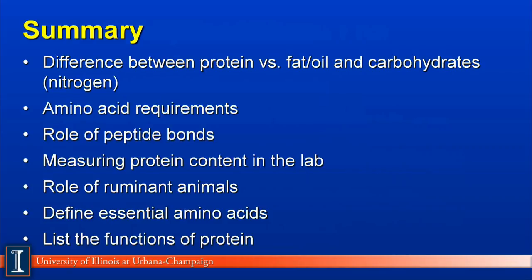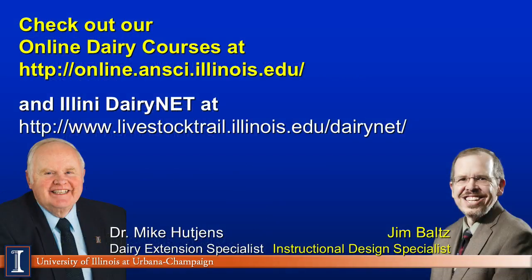Let's summarize this module. We must understand the differences between protein and other energy sources such as fats, oils, and carbohydrates — the magic element is nitrogen, and sulfur can also appear in a few amino acids. Animals really have an amino acid requirement, not a protein requirement. We must understand what peptide bonds are and why they are important in forming and digesting protein to be absorbed as amino acids. We must understand how to measure protein in a lab using the Kjeldahl process. We must understand what is unique about ruminants — breaking down about two-thirds of nitrogen to ammonia and reforming it into high-quality microbial protein. We must understand essential amino acids, which must be provided in the diet. And the two major functions of protein: as a source of protein structure in the animal and as a source of energy.